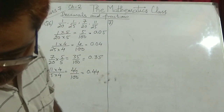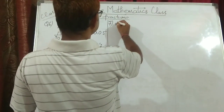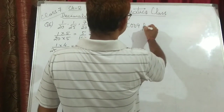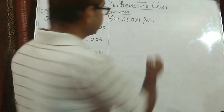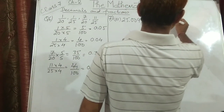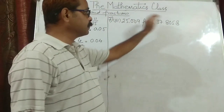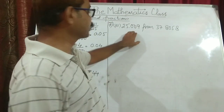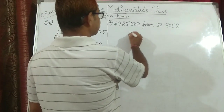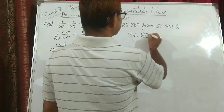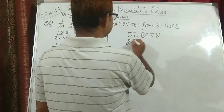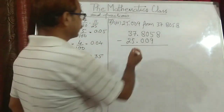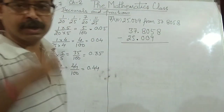Now question number 7 — I am doing the 3rd and 4th parts. The 3rd part reads: subtract 25.009 from 37.8058. We do it by vertical method. 37.8058 comes on top and 25.009 comes below. The decimals need to be aligned — decimals must come one below the other, as I told in the previous lecture.